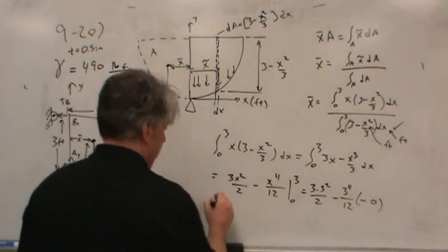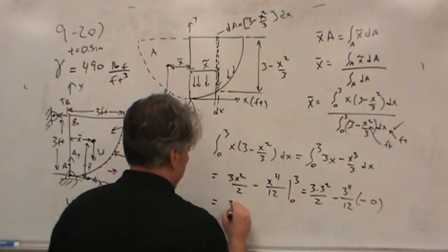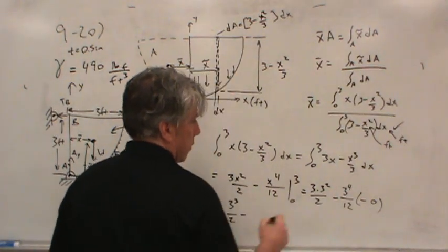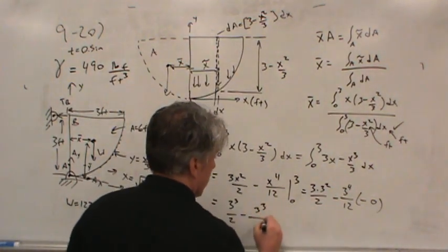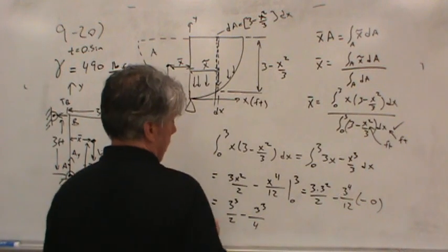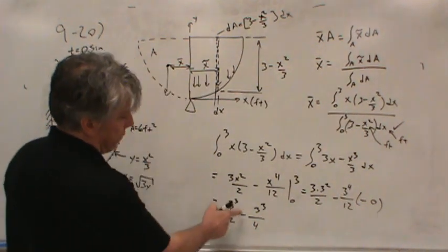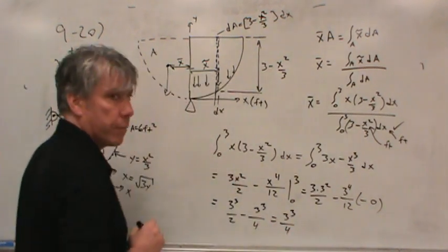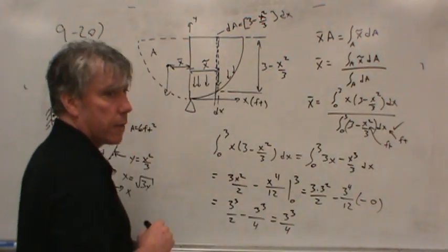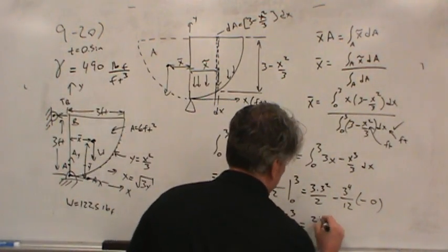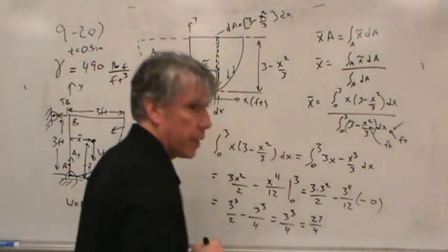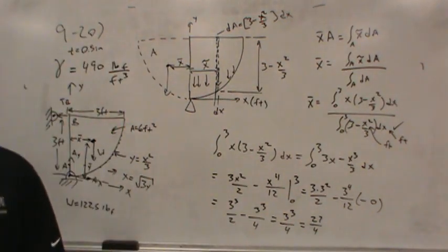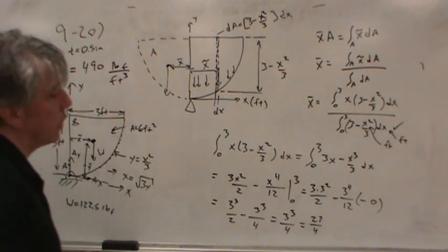Of course, they've set this problem up to make it easy to solve. We get 3³/2 − 3³/4. That's a half minus a quarter, which is a quarter — so 3³/4 = 27/4. What are the units? You've got feet times feet times feet — that's feet cubed.